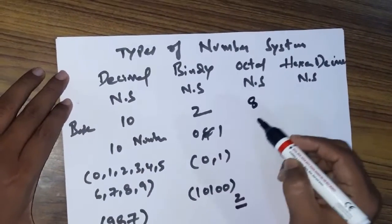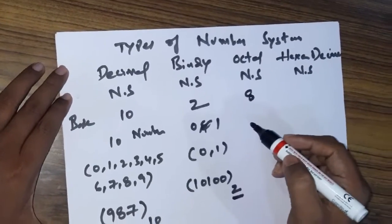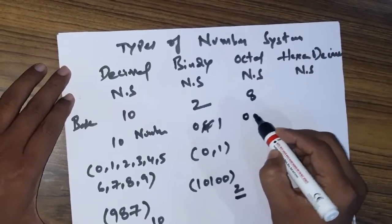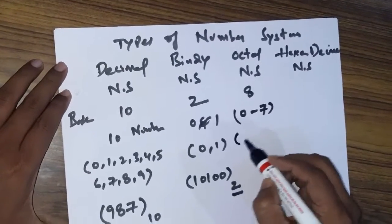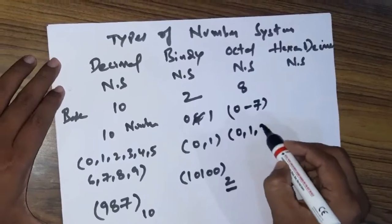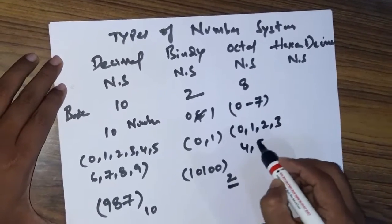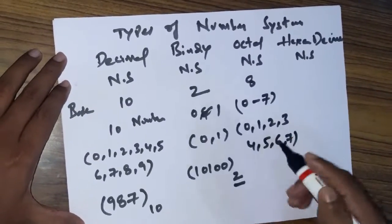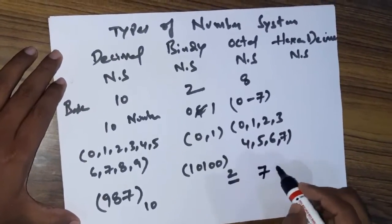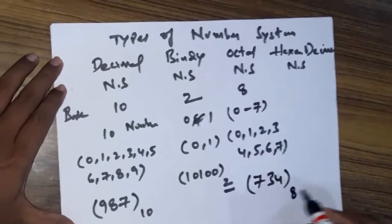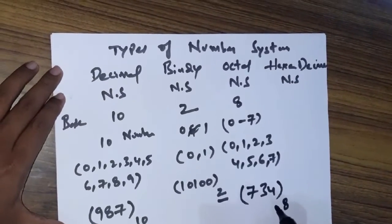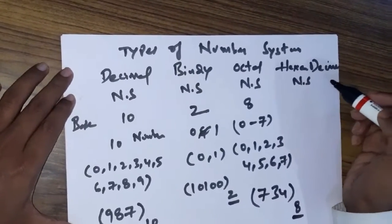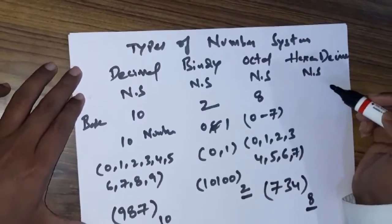The next number system is the octal number system. The base of the octal number system is 8, meaning we have 8 numbers in it: 0 to 7, that is 0, 1, 2, 3, 4, 5, 6, 7. To represent any number, we repeat digits 0 to 7 only — for example, 7334 with subscript base 8, which tells us it is an octal number.